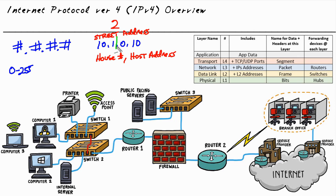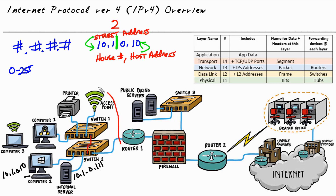Let's go to 10.1.0.10. If the first two numbers represent the street, the dividing line then says the last two numbers — the 0.10 — represent the actual host. So that's a basic concept of how an IP version 4 address works: some portion on the left-hand side represents the network or street name, and the other portion on the right represents the actual host on that network. So this IP address of 10.1.0.10 could be computer 2's address, and this internal server, which is on the same network, is going to start with 10.1 — maybe it's 10.1.0.111. We treat all of this as one network: the 10.1 network.